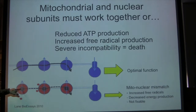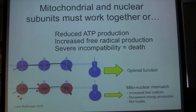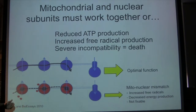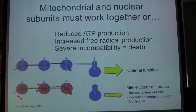When you have incompatibility — subunits that don't physically fit together right — your flow of electrons is impeded. When you impede the flow of electrons, electrons interact with other molecules and create free radicals, so you get free radical leakage. Because you're not using the energy efficiently, you have weaker proton pumping, a weaker membrane potential, and less ATP production. Mitonuclear incompatibility gives you the double whammy of reduced energy and increased free radical production. If it gets bad enough, you get cell death; if it gets really bad, total system failure.